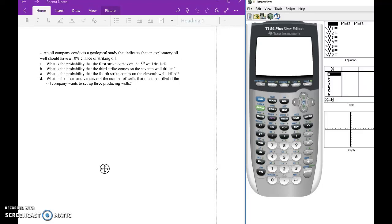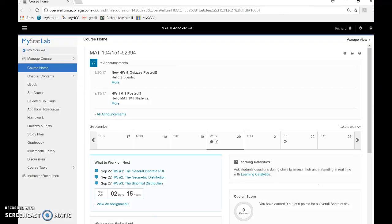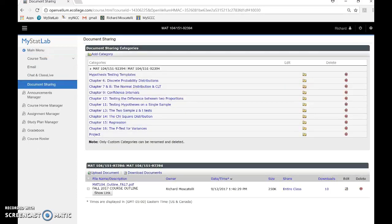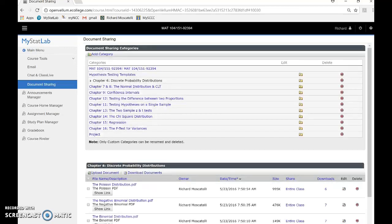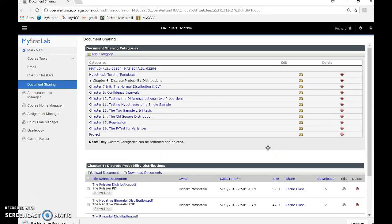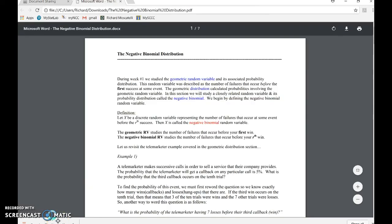Okay, so what I'm going to do is show you how to work this negative binomial example. This is in the PDF notes in MyStatLab. When you go to MyStatLab and go to the course tools menu and click on document sharing, these are all the folders where you see all the PDFs.